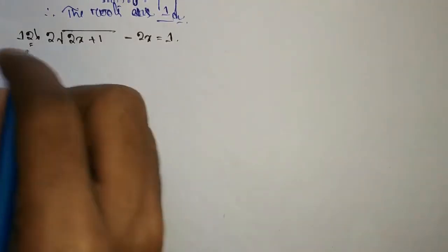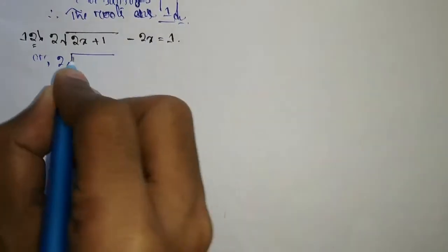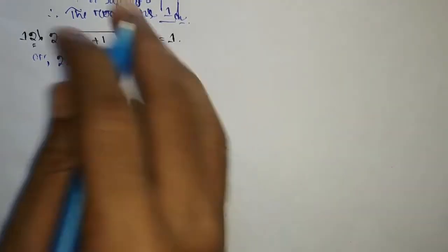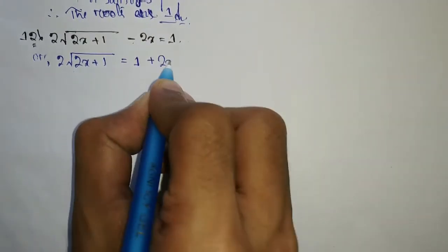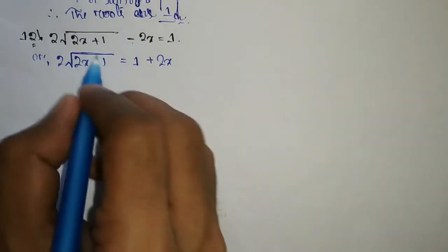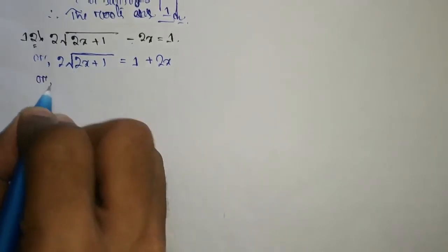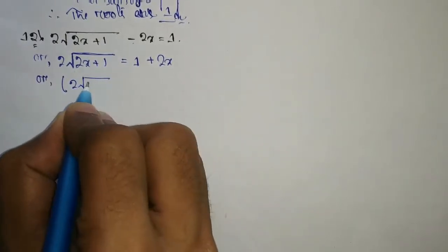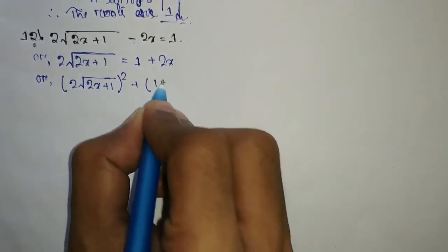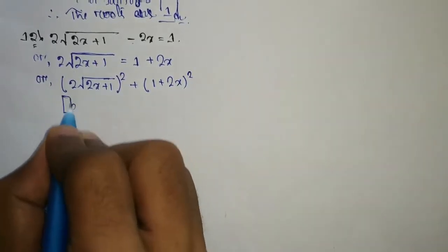In this question, we have 2 times root over (2x + 1) equal to 1 minus 2x on the right-hand side. We again get a root, so we have to remove this root. The step is squaring both sides: 2√(2x+1) whole square equals (1 + 2x) whole square.